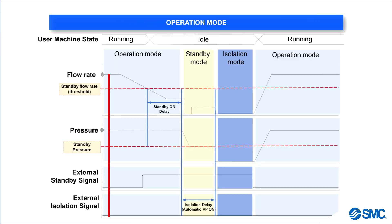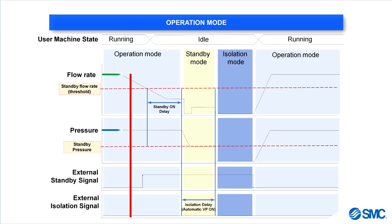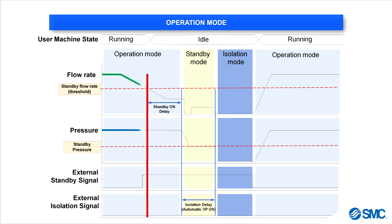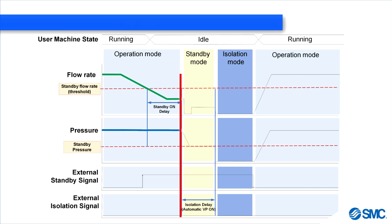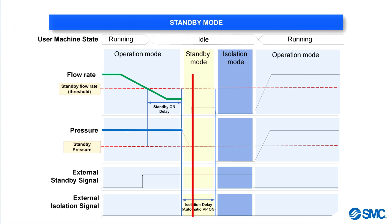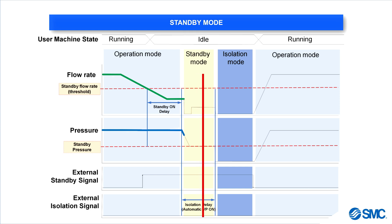When the user machine is in operation mode, the flow rate is high. When the user machine goes into idle mode, the flow rate drops. Once the flow rate drops below the standby flow rate threshold, the standby on delay timer is started. After the standby on delay time period has passed, if the standby input signal is still on, the system will lower the standby pressure.